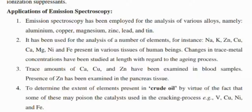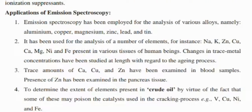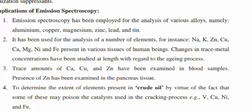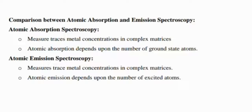Atomic emission spectroscopy has been used for the analysis of a number of elements including sodium, potassium, zinc, copper, calcium, magnesium, nickel, and iron present in various tissues of human beings. Changes in trace metal concentrations have been studied with regard to aging processes. Trace amounts of calcium, copper, and zinc have been examined in blood samples, and the presence of zinc has been examined in pancreas tissues. It is also used to determine the extent of elements present in crude oil, since some may poison the catalyst used in the cracking process — such as vanadium, copper, nickel, and iron.